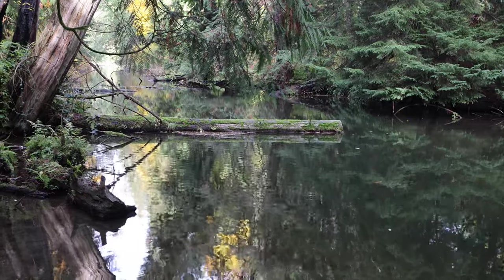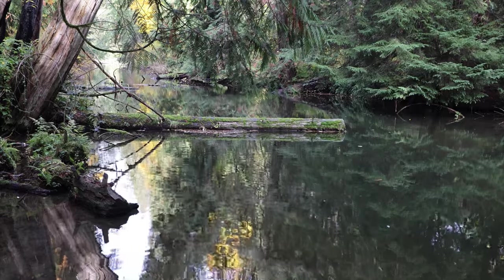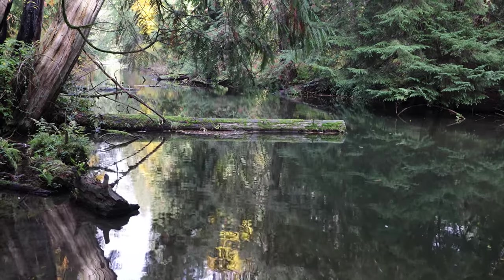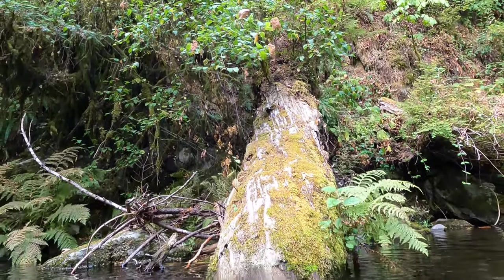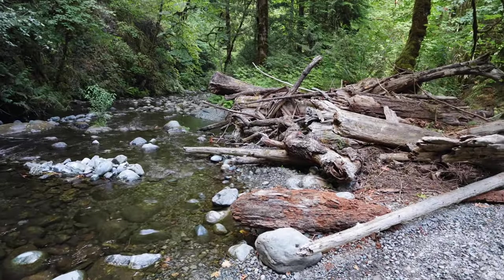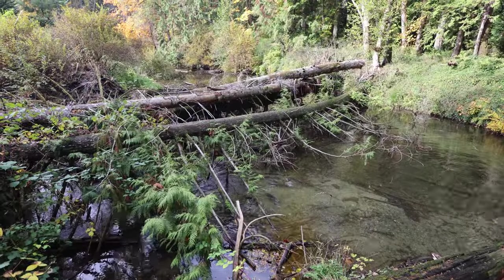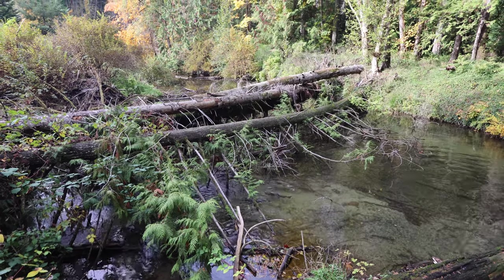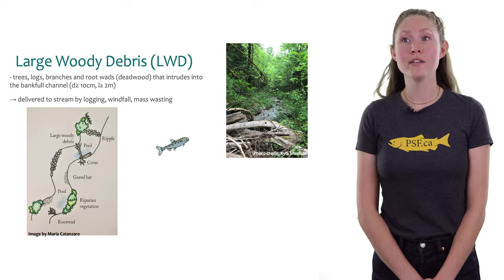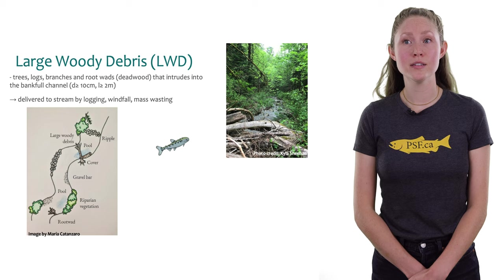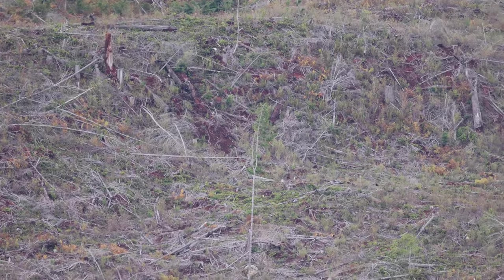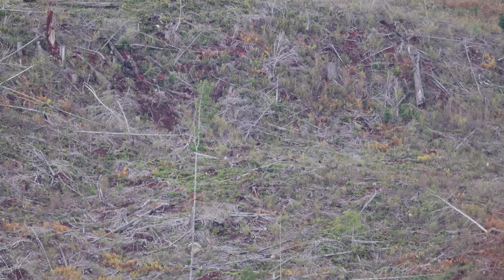To be considered LWD, the wood has to extend into the bank full channel — that's the high water line — so that it influences the habitat directly. LWD is usually at least two meters in length and at least 10 centimeters thick. LWD comes into the channel from the riparian areas around the stream, or it gets carried down the river from riparian areas upstream. Live trees can crash over in storms — this is called windfall — or in landslide events where the soil gives out, called a mass wasting event. Sometimes you'll see logs that look cut, which may have entered the stream from logging activities.